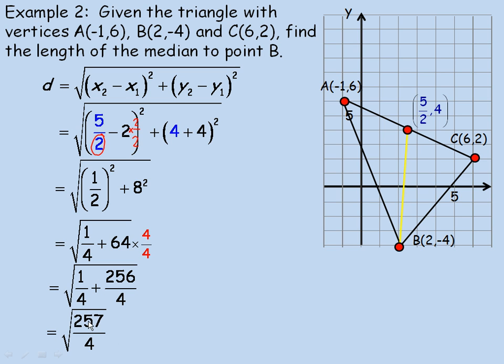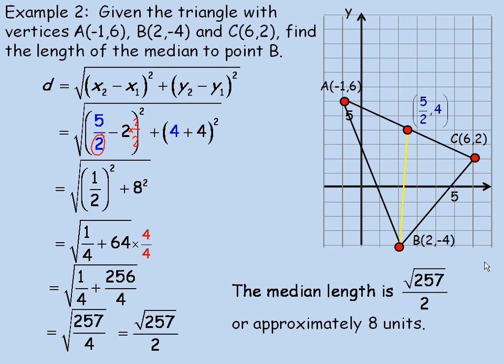Now, 257 is not a perfect square, but 4 is. And so we could rewrite this as the root of 257 over 2. So we're leaving the 257 underneath the root in the numerator. But the square root of 4 is 2. So we can bring that out because it is a perfect square. So that's the exact distance from B to the median over here. So the length of the median is root 257 over 2, or approximately 8 units. That's just over 8 units. And that's the end of our lesson.